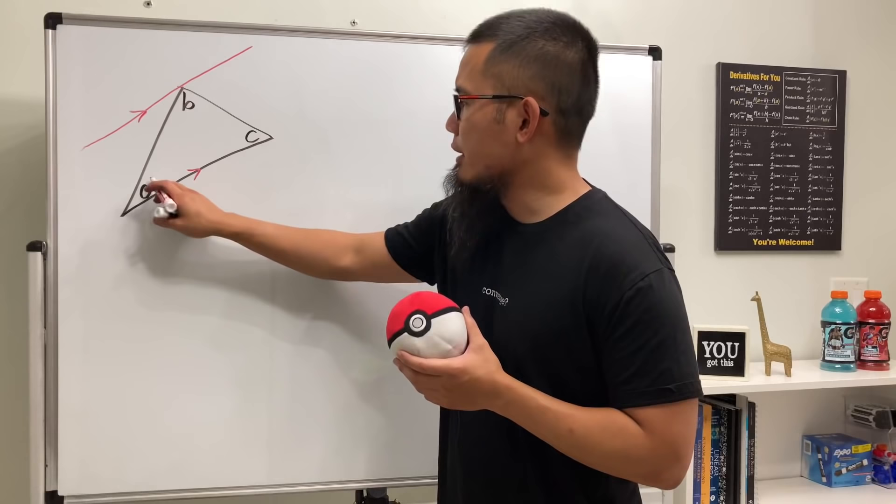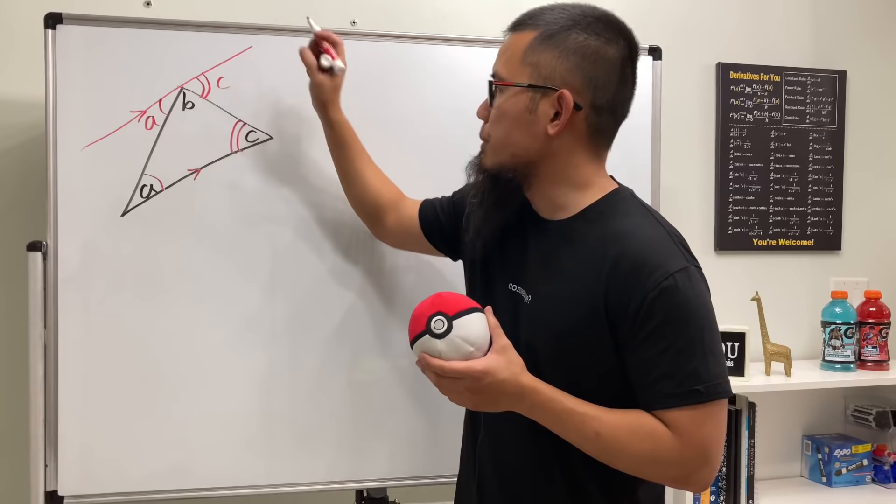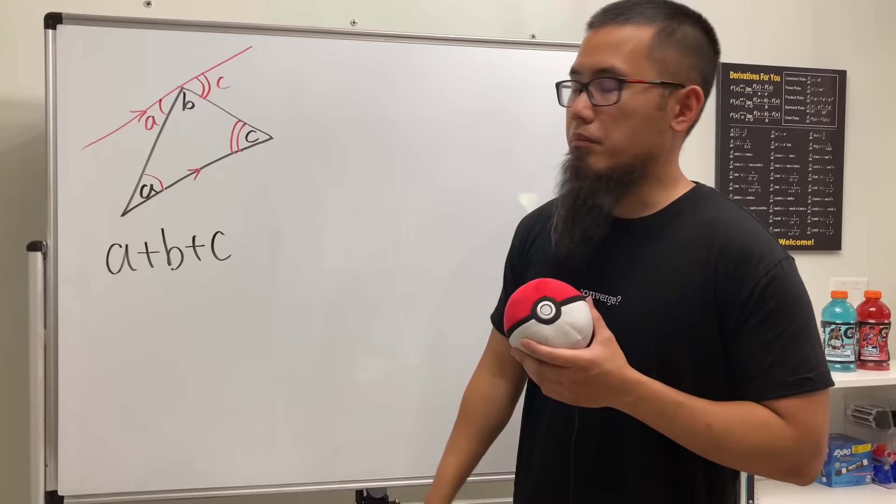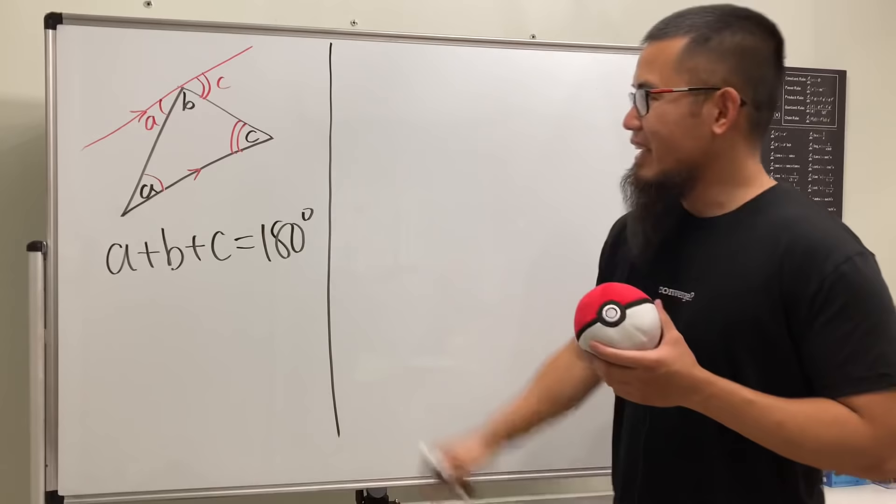Thanks to this parallel line we know that this angle is the same as that angle, so this will be angle measure A as well. And likewise this angle will be the same as that angle which is going to be C. Now have a look, we don't know A plus B plus C maybe, but we do know once we look at A plus B plus C because they're on a straight line, so we know that has to be 180 degrees. And guess what, we are done.